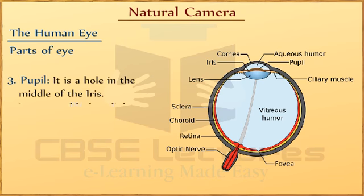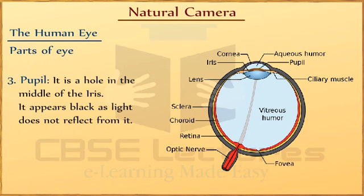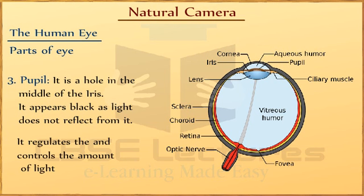Third, Pupil. The aperture or opening of the eye is the pupil. It is a hole in the middle of the iris. It appears black as light does not reflect from it. It regulates and controls the amount of light entering the eyes. Its size decreases in bright light and increases in dim light.